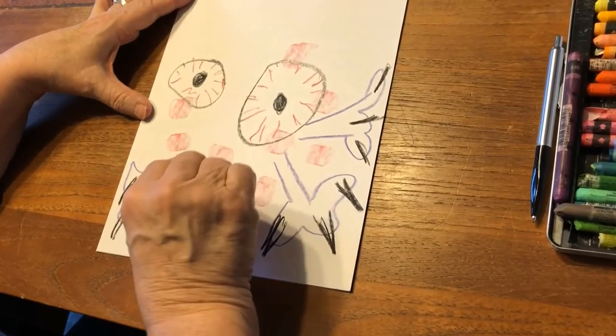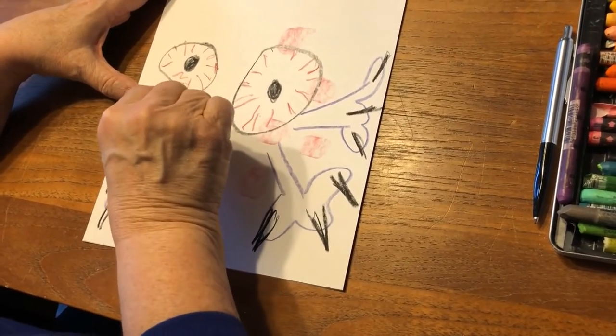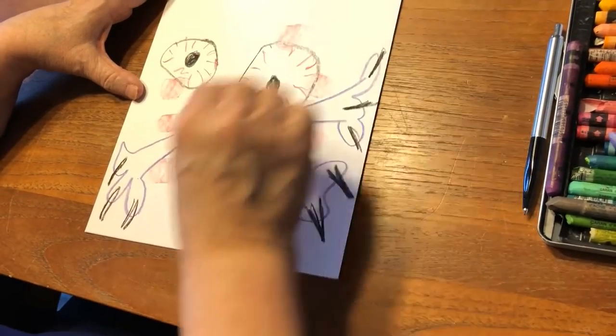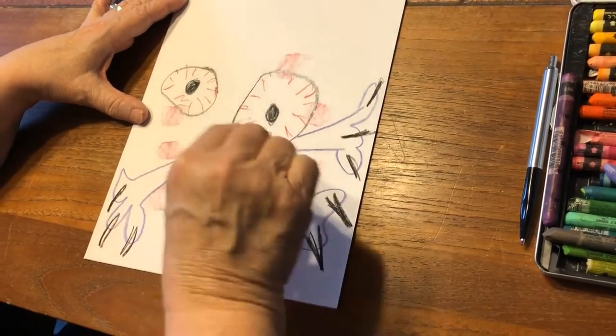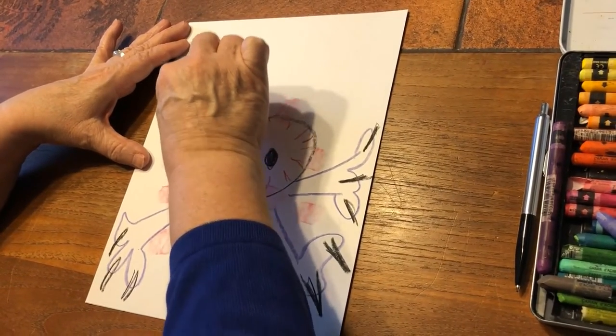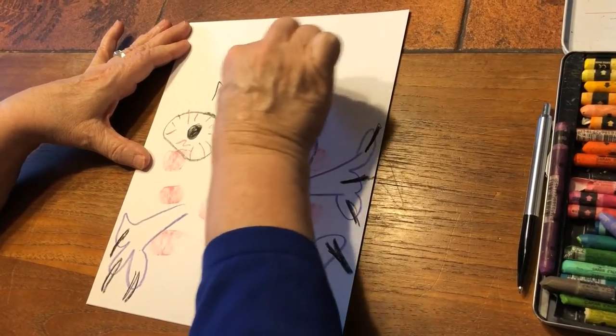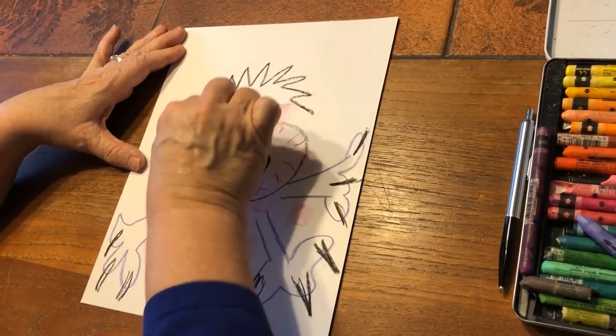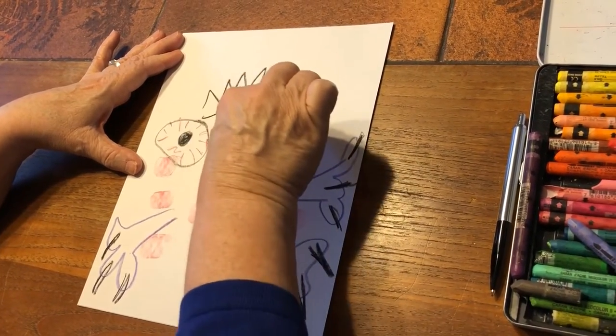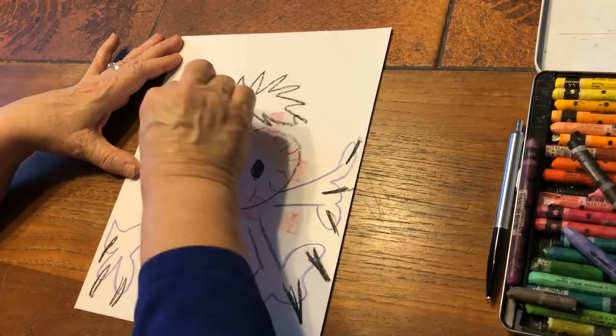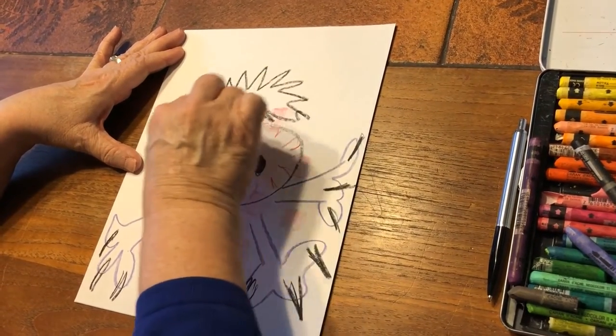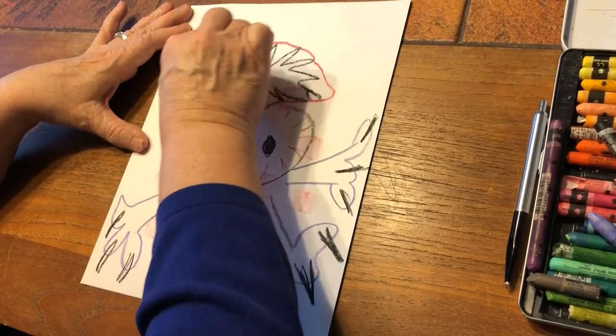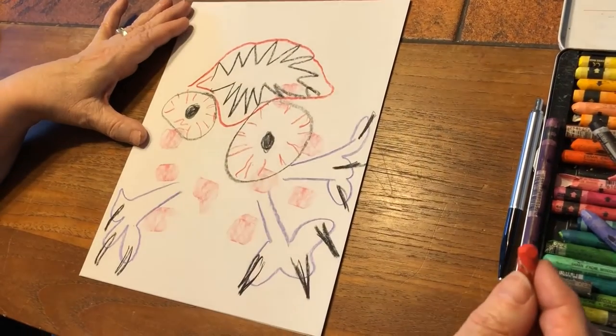Now let's do a mouth. This is like, you might put a mouth here, but let's not. Let's put the mouth up here. So we're gonna make it like a pumpkin. All right. And maybe we'll put that together. So there's our mouth.